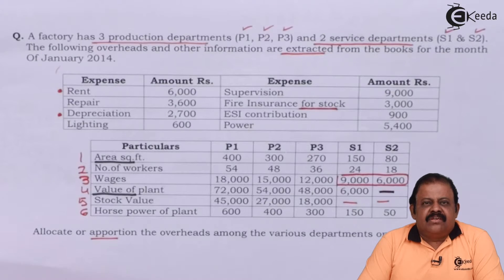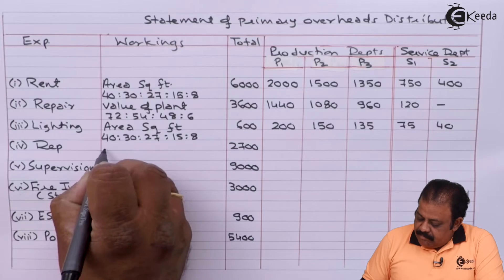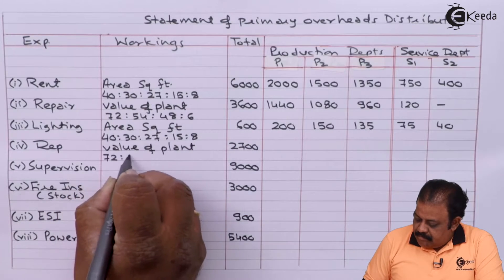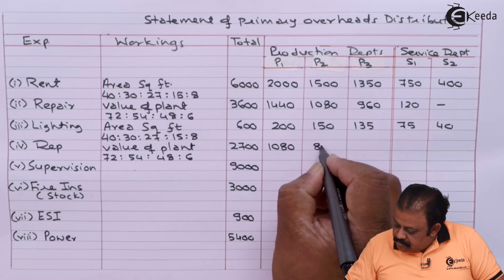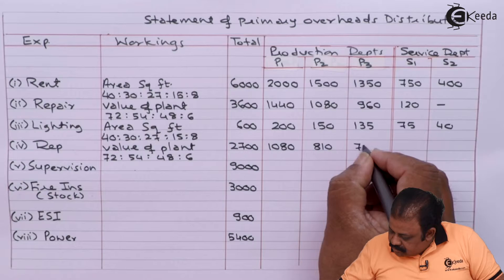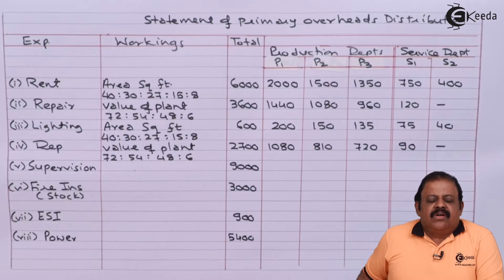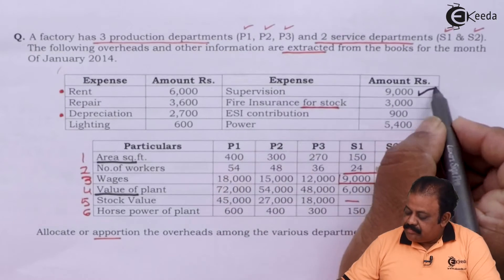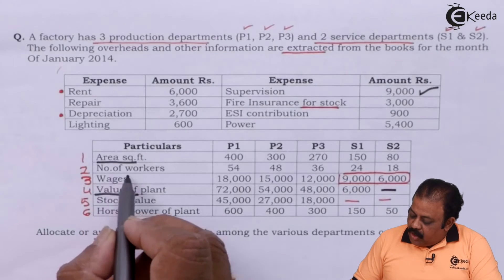Lighting will be allocated based on floor area in square feet. Depreciation will be allocated based on value of plant; there will be no depreciation for service department 2 as it has no plant. Supervision of 9000 will be allocated in the ratio of number of workers.